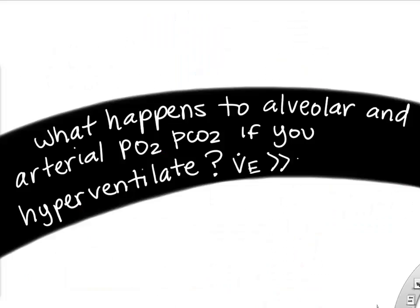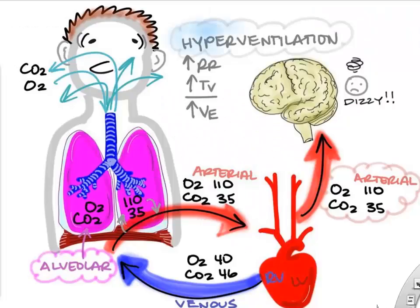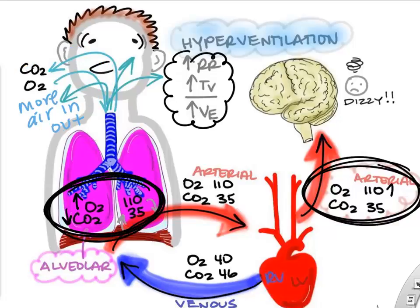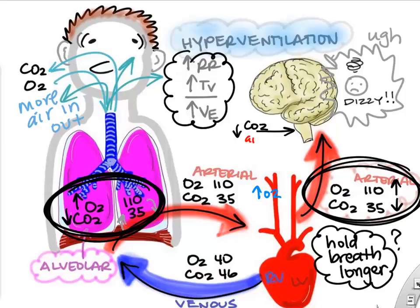What happens to alveolar and arterial levels if you hyperventilate? If you start breathing more than your metabolism requires, if you're hyperventilating you're ventilating more — so you're breathing off more CO2 and breathing in more O2. Looking at the lung changes and the arterial changes, our oxygen levels are higher than normal and our CO2 levels are lower than normal.